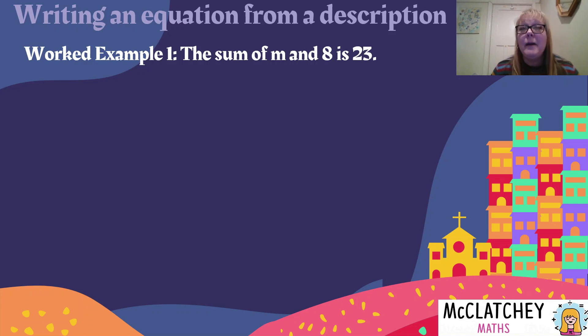We're going to have a quick chat now about how to make an equation from a word description. In our first example, we've got the sum of m and 8 is 23. So if we look back at our previous videos, it's about three or four videos back, we looked at writing expressions from descriptions. And it follows the same principles that we followed in that video. Our keyword here is the word sum, and sum means to add. So we are taking m and 8. The sum of those is m plus 8 equals 23.